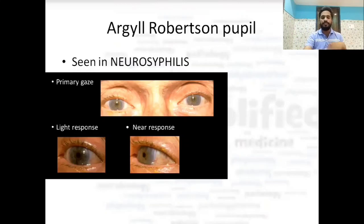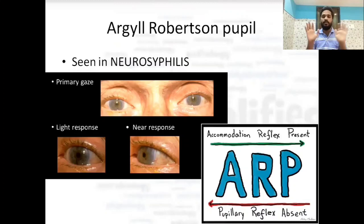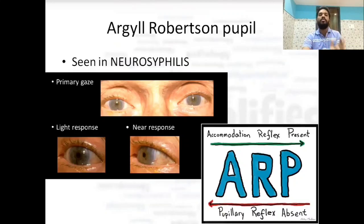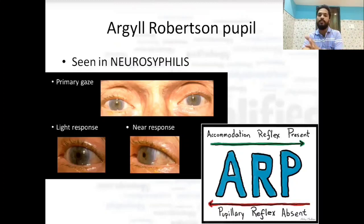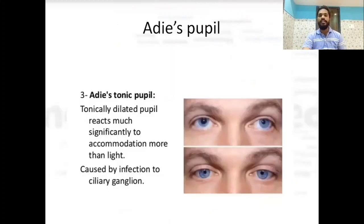Argyll Robertson pupil is usually seen in neurosyphilis. The pupil does not react to light but does react to accommodation — constricting when an object comes near. Mnemonic: ARP — Accommodation Reflex Present; PRA — Pupillary Reflex Absent.